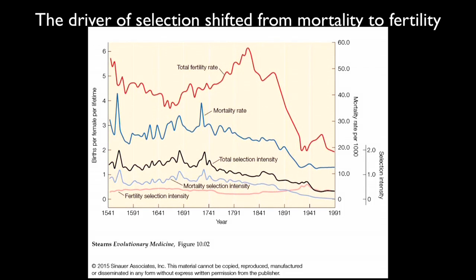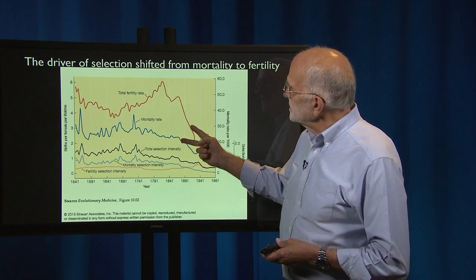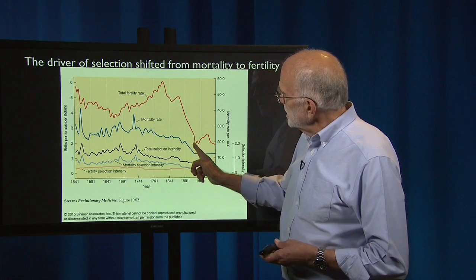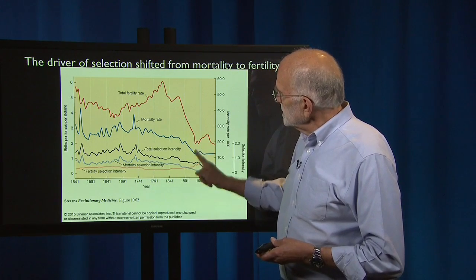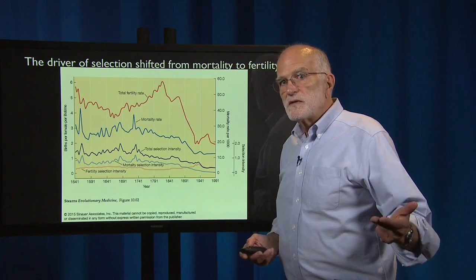The time scale runs from 1540 to 1991, and the sample is from England. Total selection has declined; mortality selection has declined virtually to zero, but selection due to variation in fertility has continued and is what is maintaining selection in contemporary populations. The demographic transition was pretty much completed in the UK by about the year 1900.